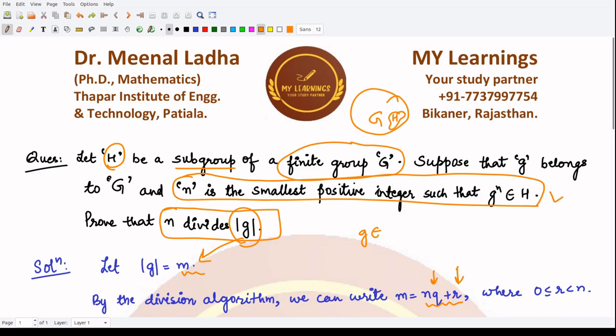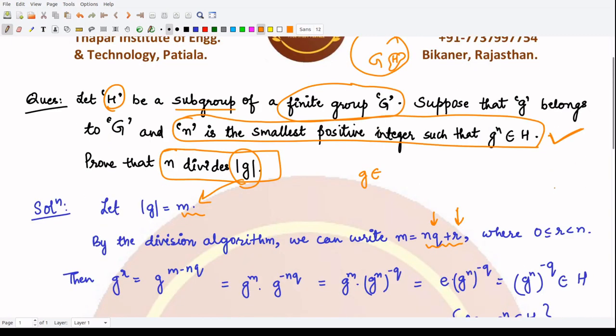Let's see how we prove this thing by making use of this condition. Let's consider g raised to power r. But why? Because we are focused on r, so you can write r from here as m minus nq, so you can write g raised to power r as g raised to power m minus nq.